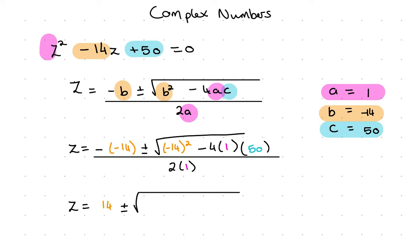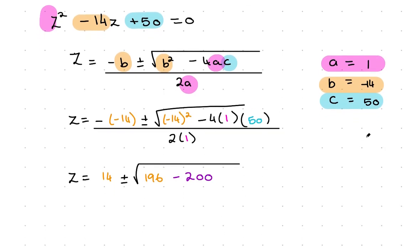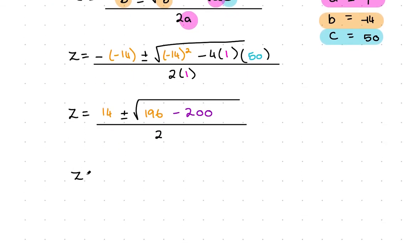Minus 4 by 50 is minus 200, all over 2. What I get is z equals 14 plus or minus the square root of 196 minus 200, which gives me minus 4, all over 2.